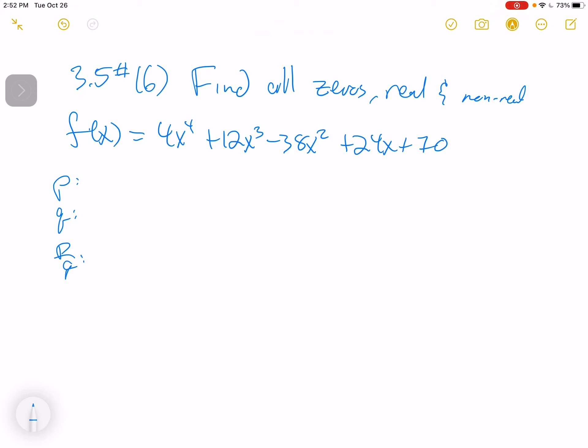First off, we're going to look for our p's, which are the factors of the constant. That's quite a long list: plus or minus 1, plus or minus 2, plus or minus 5, plus or minus 7, plus or minus 10, plus or minus 14, plus or minus 35, plus or minus 70.